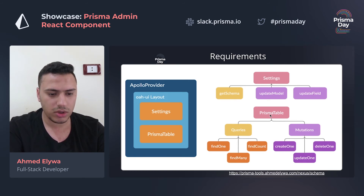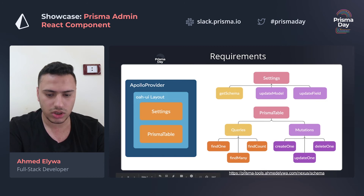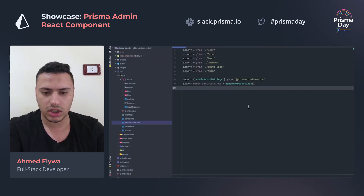The Prisma table requires three queries and three mutations. All these queries and mutations can be auto-generated using the PrismaToolsNexus package. Here is an example importing admin nexus settings from PrismaToolsNexus and exporting it to the schema file.